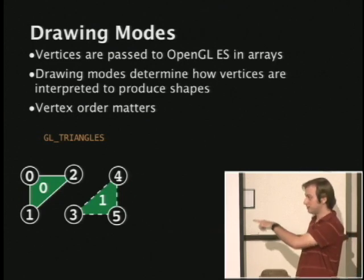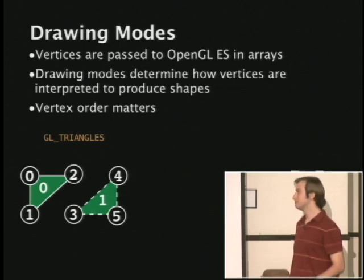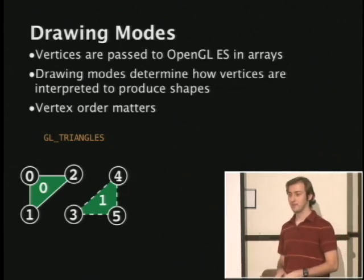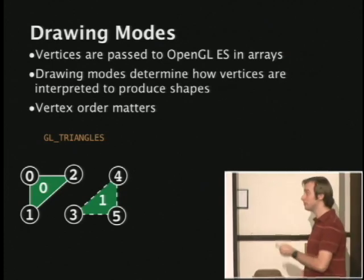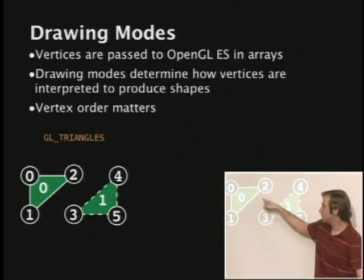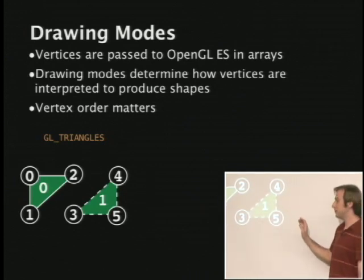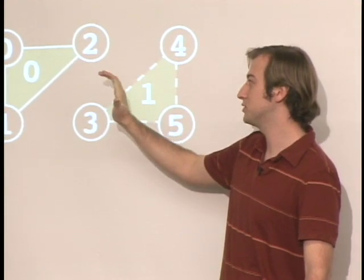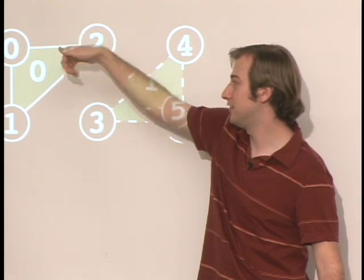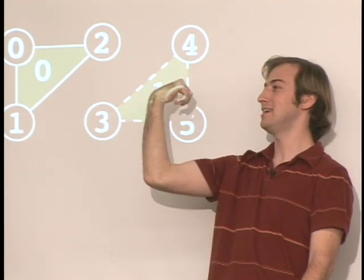Triangle 1 is drawn with a dotted outline because the order of vertices matters — it's facing the opposite direction. For vertices 0,1,2 we're drawing a counterclockwise shape, but 3,4,5 is clockwise. This determines the facing of the triangle — the right-hand rule: if you wrap your right hand around in the direction of vertex ordering with your thumb pointing out, it's front-facing; thumb pointing in means back-facing. This is an easy thing to screw up.